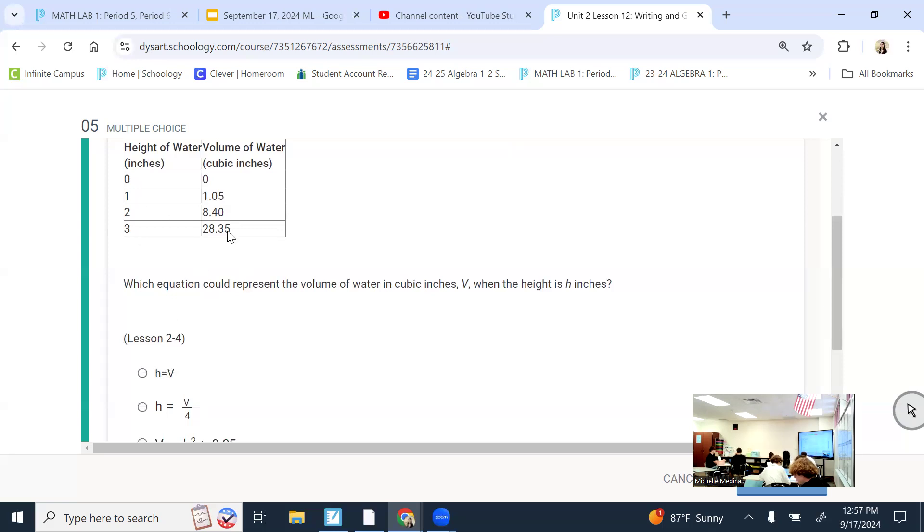So if I plug in zero, it does equal zero for this first one. But for the next row, does one equal 1.05? Right now, what I'm doing is I'm plugging it into these equations and seeing if they're true. So if I'm plugging in my first ordered pair, zero for the h, zero for the volume, that's true. But then when I plug in the next pair, is this true? So then don't pick that one.